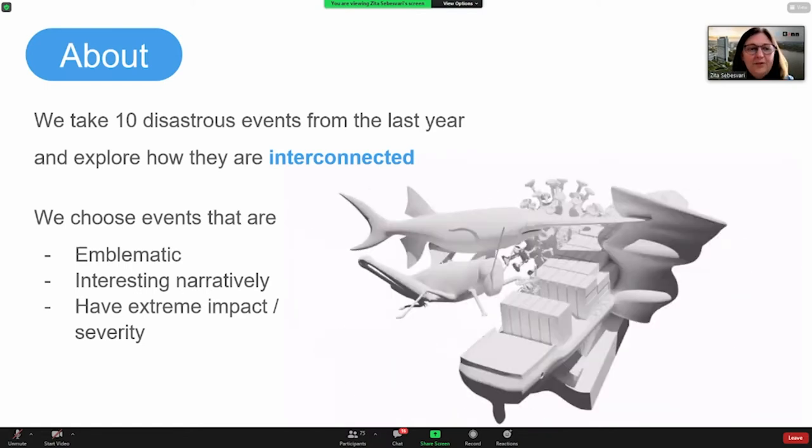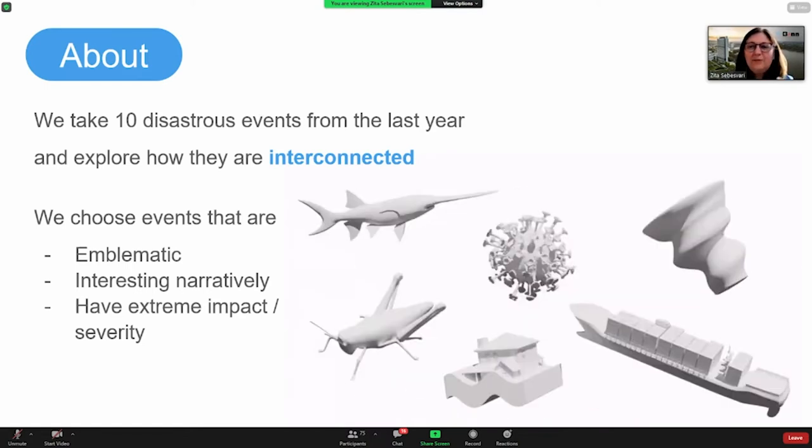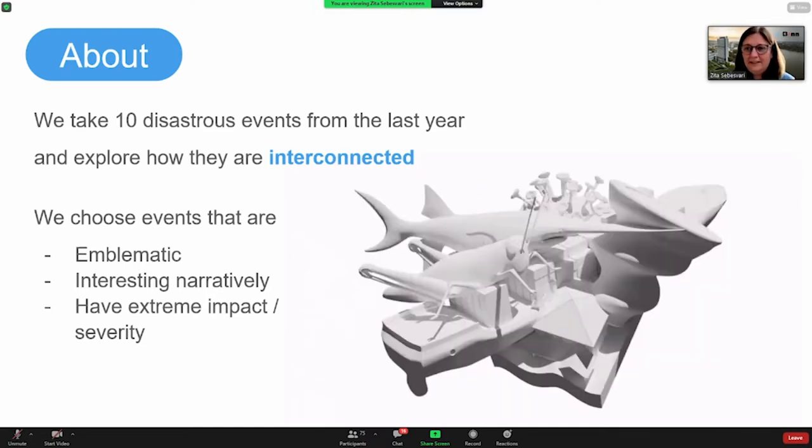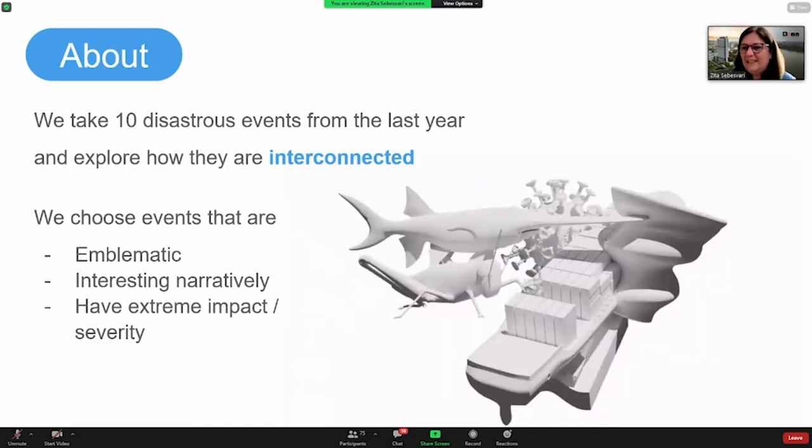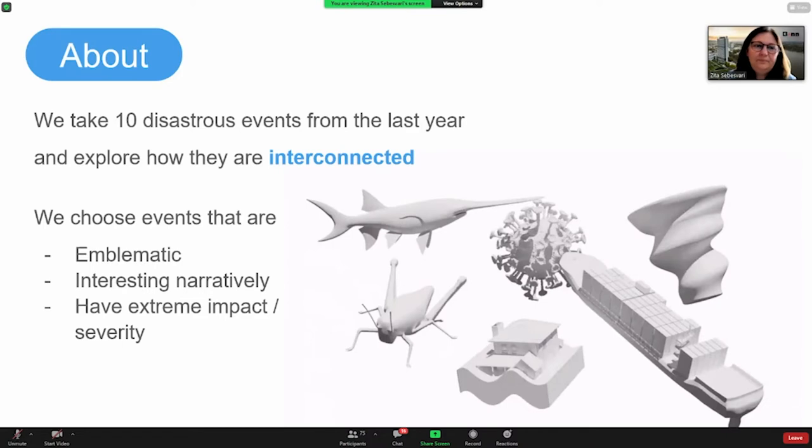And of course, we also try to work out interesting narratives which can stick with the reader. So the events we looked at were the Amazon wildfires, and the heat wave in the Arctic, explosion in Beirut, a series of flooding events in central Vietnam, the extinction of the Chinese paddlefish, COVID-19, cyclone Amphan,